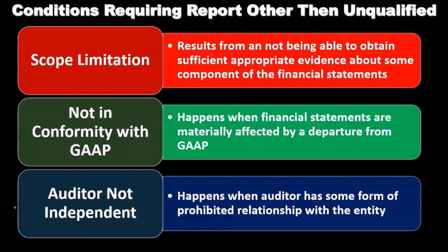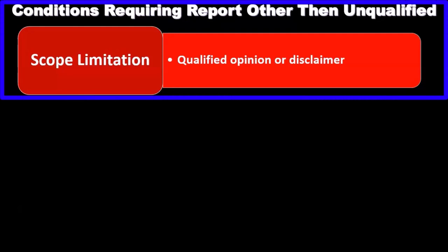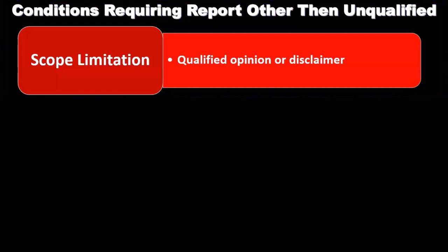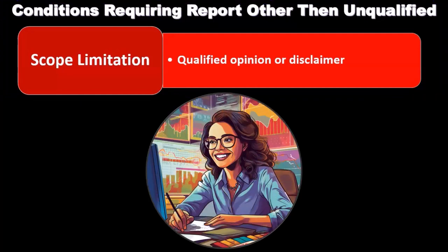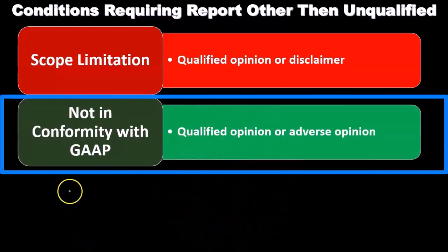Independence is a big deal within the auditing process. So what would happen if there was a scope limitation? We'd have a qualified opinion or a disclaimer of opinion. If it's a scope limitation, we could say there's just one piece that we couldn't audit and qualify that one piece. However, if it's a very significant piece, we'd have to issue a disclaimer of opinion given the scope limitation.